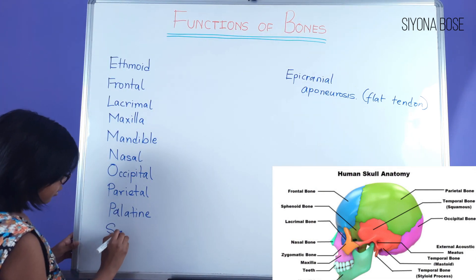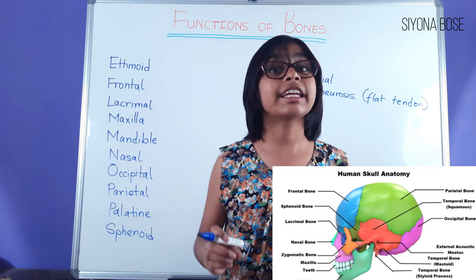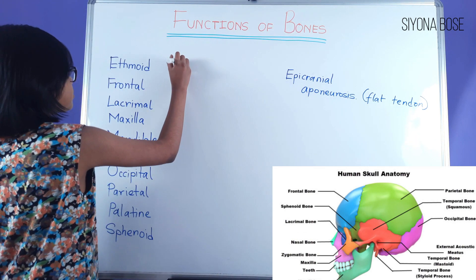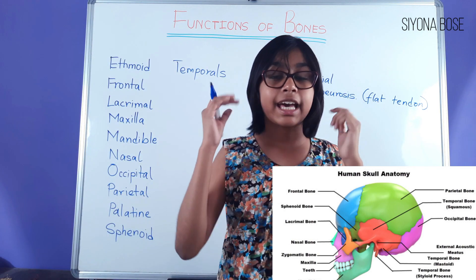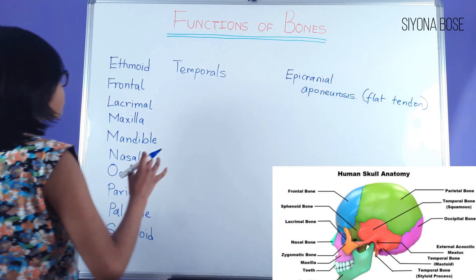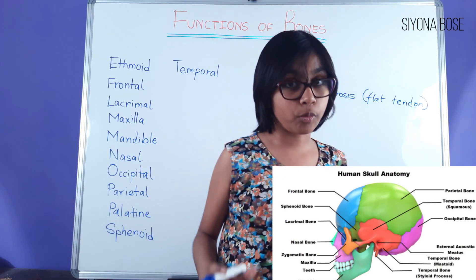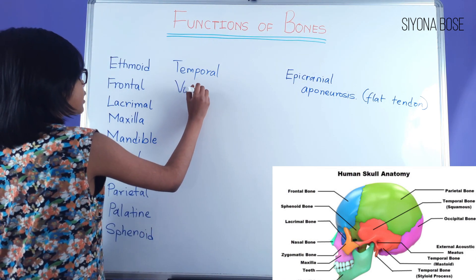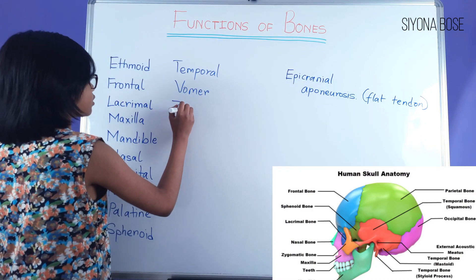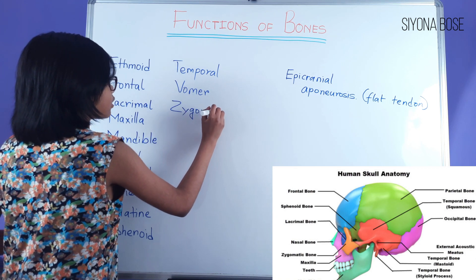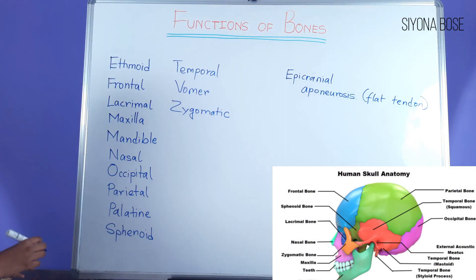We have the sphenoid — there is just one sphenoid bone, and it is an irregular bone. Then temporal — two temporals, making up the sides of the head, like the temple we have over here. Then the vomer. And lastly we have the zygomatic bones, which are basically the cheeks.